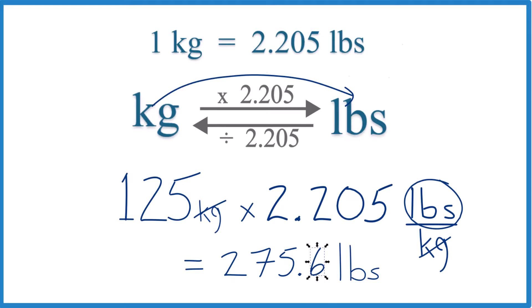So that's it. When you convert 125 kilograms to pounds, you get 275.6 pounds. This is Dr. B. Thanks for watching.